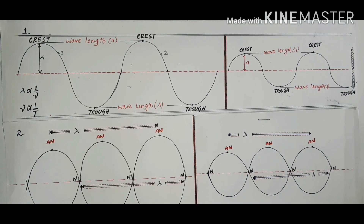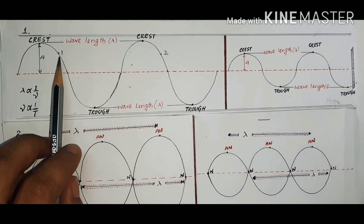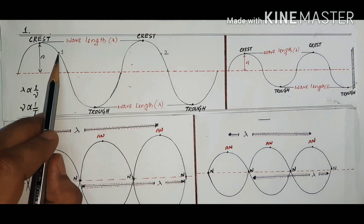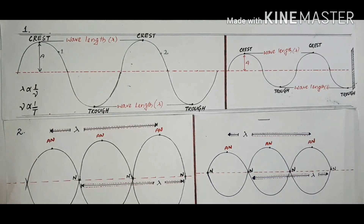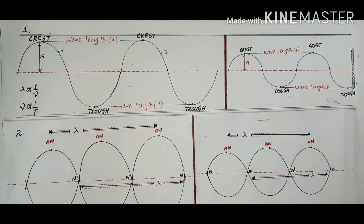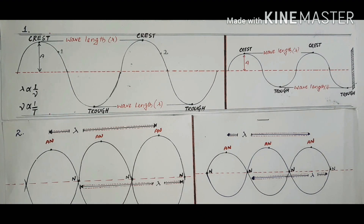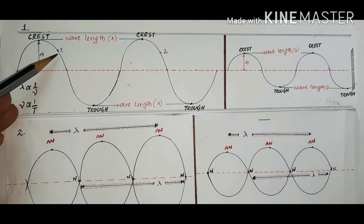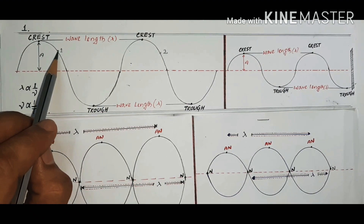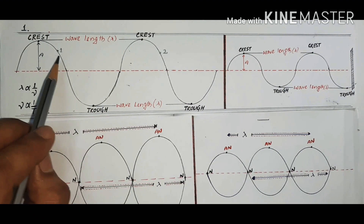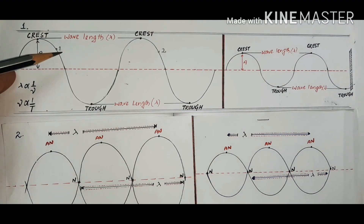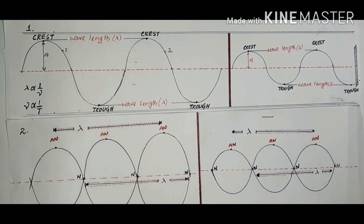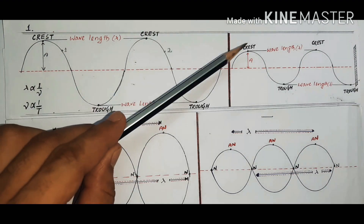We can also define the wavelength as the distance between two points which are in phase with each other. If you see carefully, point one and point two are in phase with each other. Points are in phase when they are located at the same position and doing the same thing — for example, both moving downward. The wavelength in one case is more and in another case is less.